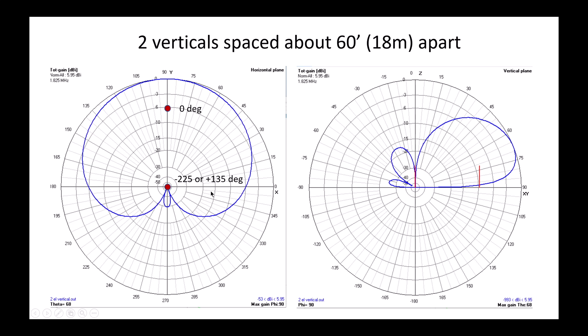To the left is the azimuth plot and the right the zenith plot. We call this an N-Fire array because the main forward lobe is coming off the end of the two verticals. It's an N-Fire array.